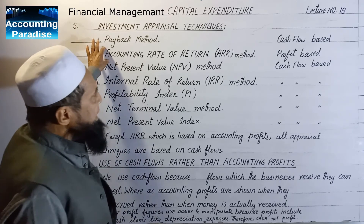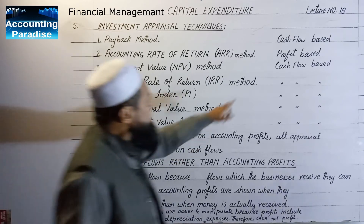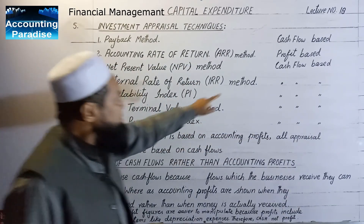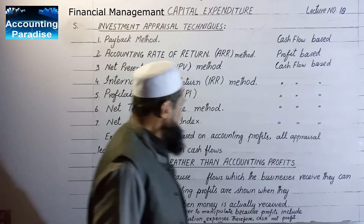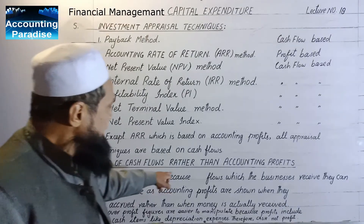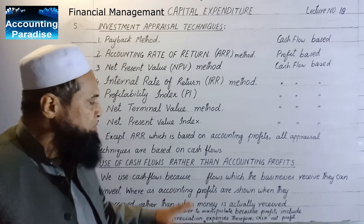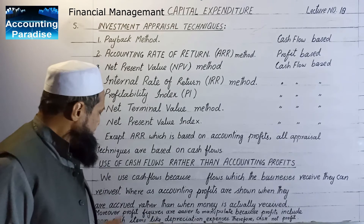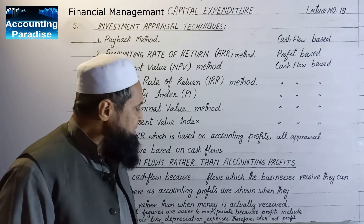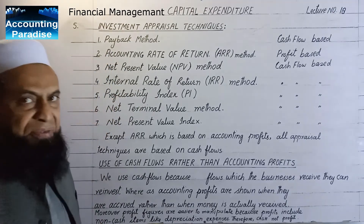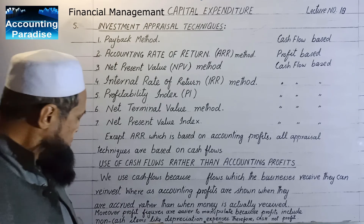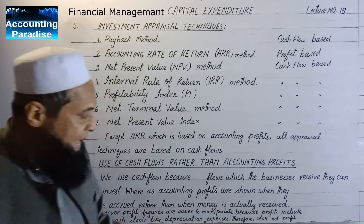Except for ARR — the accounting rate of return — which is based on accounting profit, all appraisal techniques are based on cash flows. We use cash flows rather than accounting profits because cash flows which businesses receive can be reinvested, whereas accounting profits are recognized when they are accrued rather than when money is actually received. Moreover, profit figures are easier to manipulate because profits include non-cash items like depreciation expenses. Therefore, cash — not profit — is used.